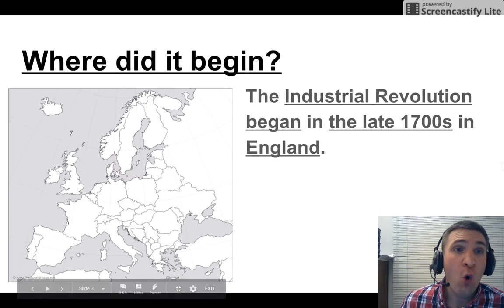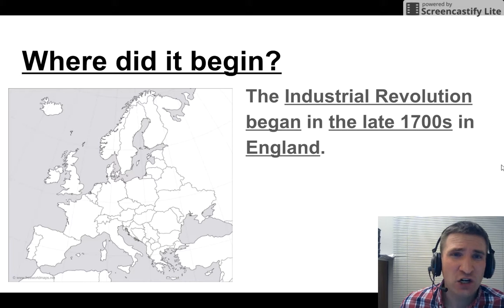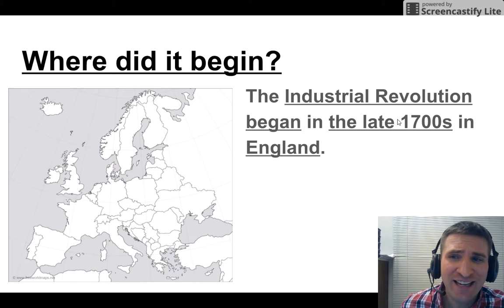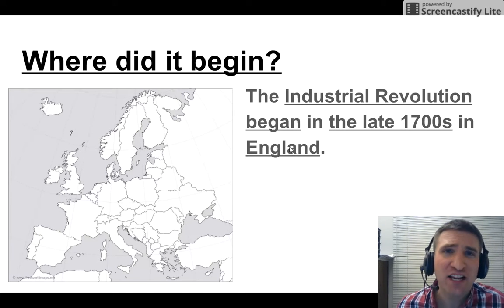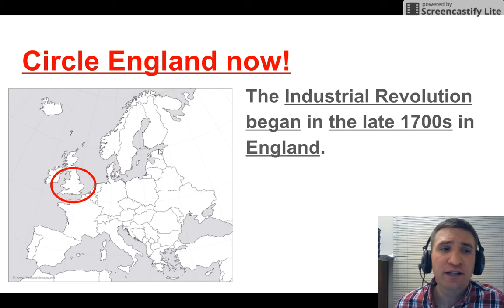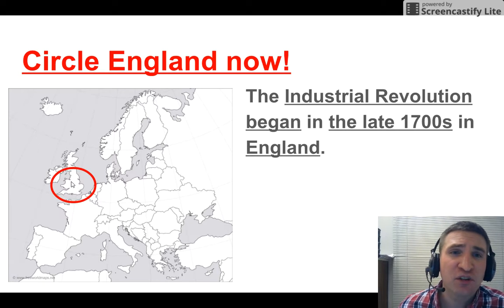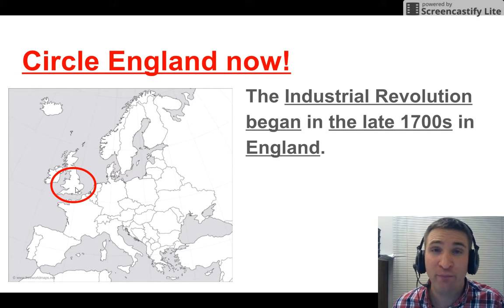Where did it begin? The industrial revolution began in the late 1700s in England. Where is England on this map? Here it is. Please circle England on your map on your paper now.